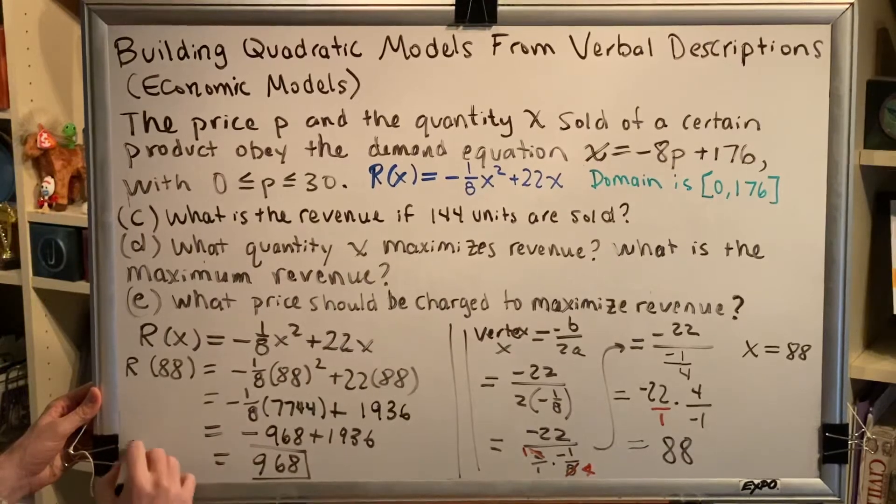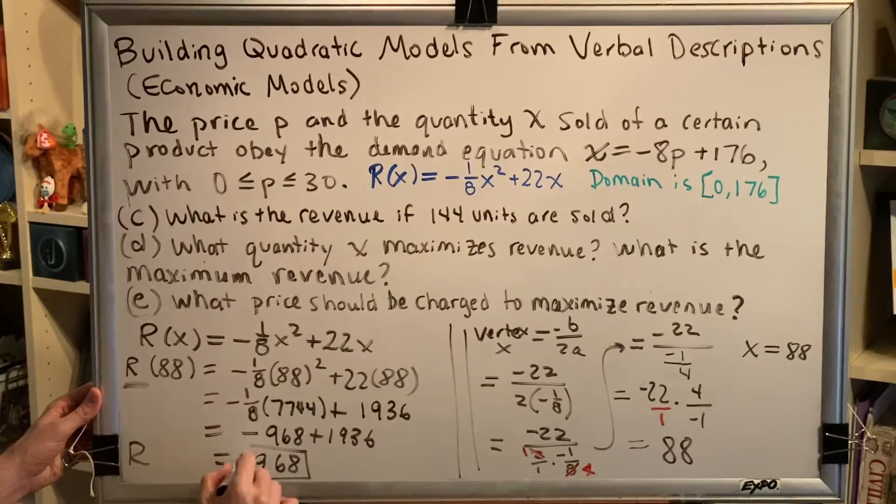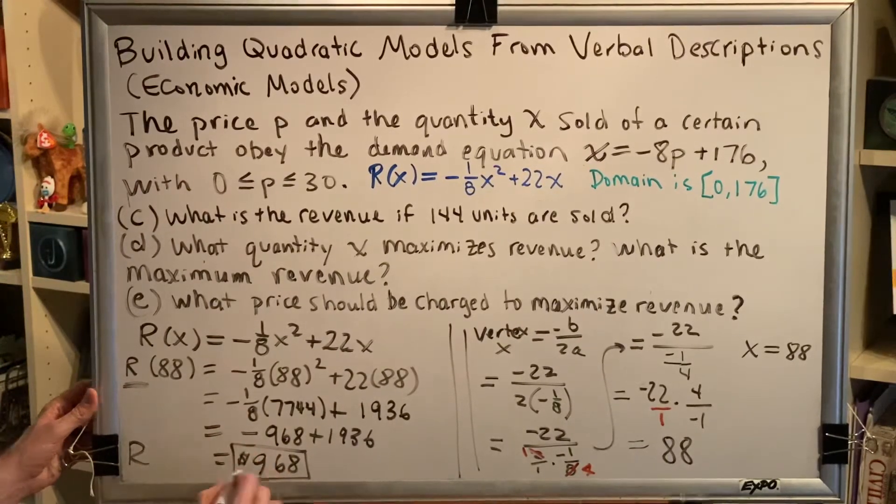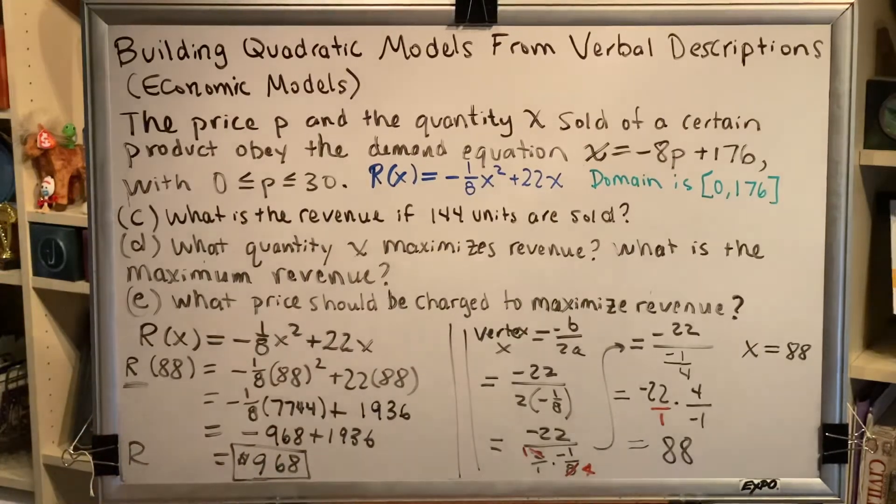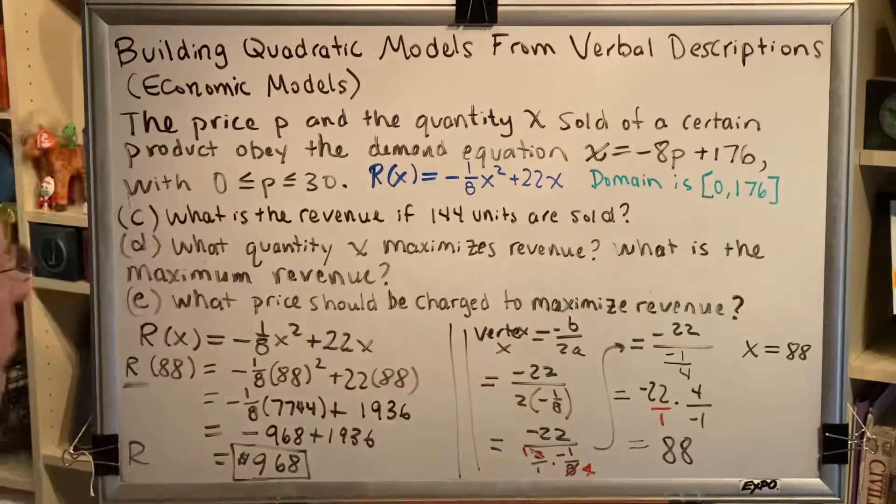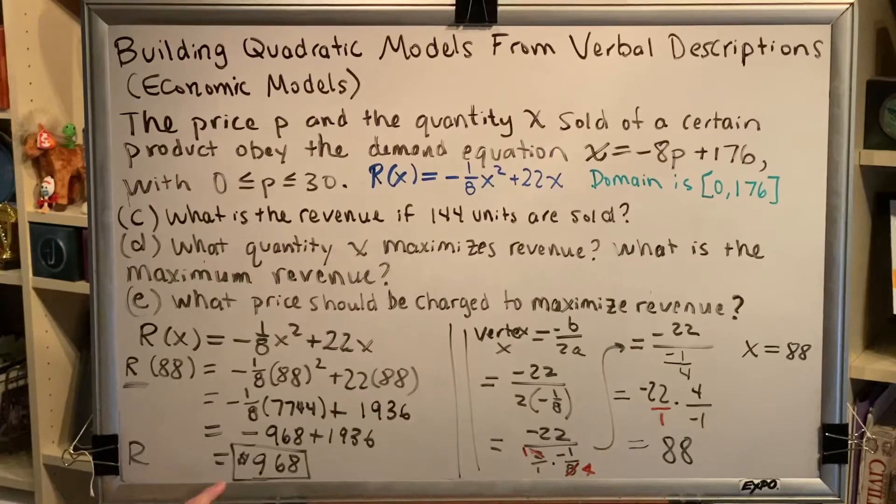negative 968 plus 1936 gives us the value 968. 968 what? Well, this was our revenue, so it's 968 dollars. When 88 units are sold, it will bring in the maximum revenue of 968 dollars.